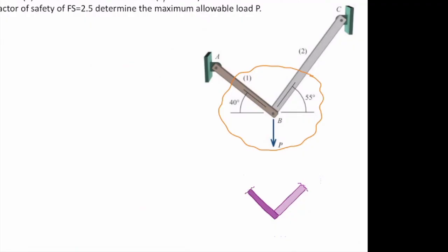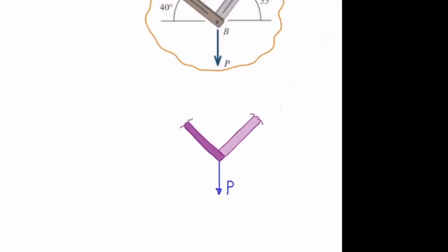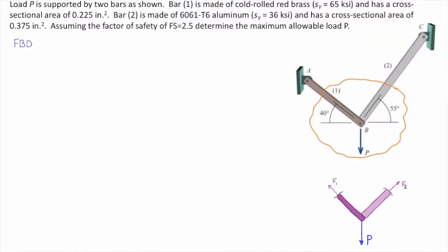Take it out, put external forces and internal forces. So external force P is acting at this point, and on the cut section, we put two unknown forces. One in element number one, like this, another one in element number two, like this. And again, all these forces should face outward from the surface.